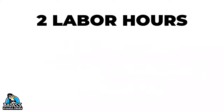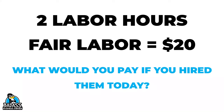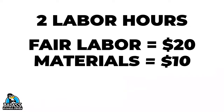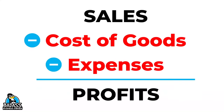For example, let's say you have a service-based business with two labor hours and a fair wage of $20 per hour — think about what you'd have to pay someone off the street to do what you do, whether that's $15, $18, $20, or more. Now let's say the service also has $10 in materials. This means you have $10 in materials and $40 in labor hours, giving you a true cost of goods of $50, not just the $10 that many people would only account for. In order to price correctly, you have to have the right cost of goods, and you need to be included in those.